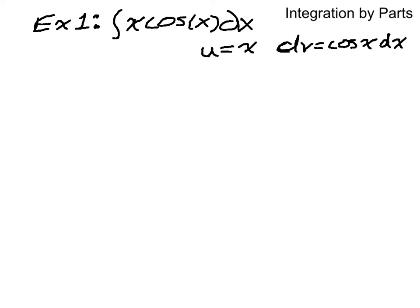And the choice that I made was, you usually want to select u so that if you had to take repeated derivatives, eventually the derivative would go to zero. That's not always going to work, but if it's an option, you should make that choice. So that tells me that du is dx, and v is sine of x.